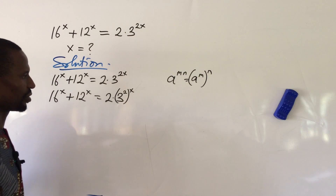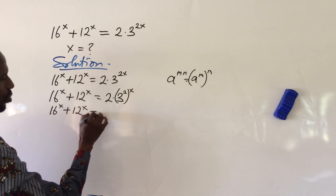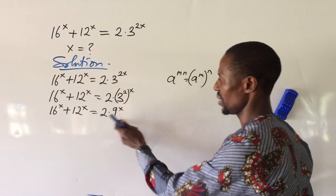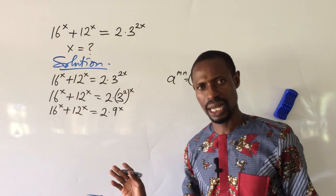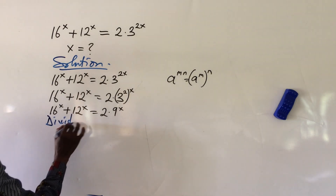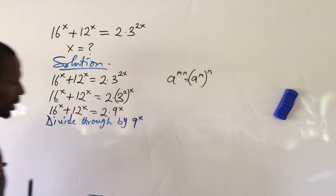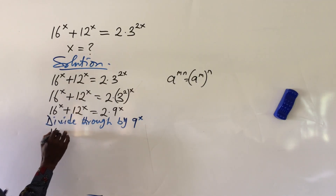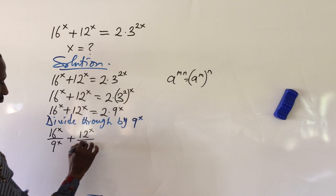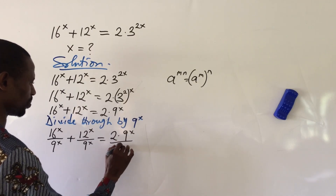Now 3 to the power of 2 gives us 9. So we have 16 to the power of x plus 12 to the power of x equal to 2 · 9 to the power of x. What we do now is divide through by 9 to the power of x, so the right-hand side carries just the constant. Dividing through by 9^x gives us: 16^x over 9^x plus 12^x over 9^x equal to 2 · 9^x over 9^x.